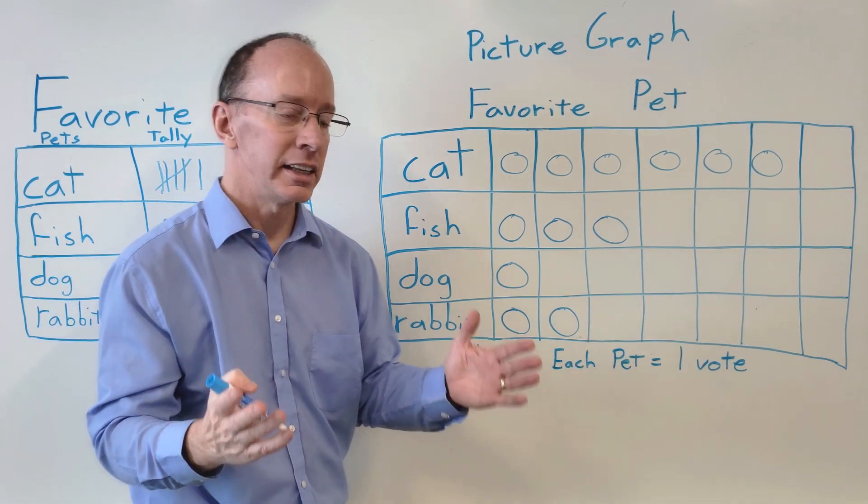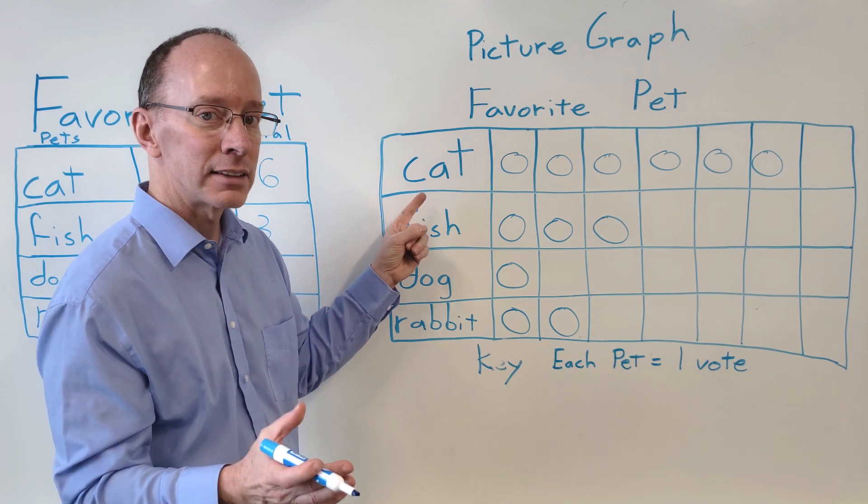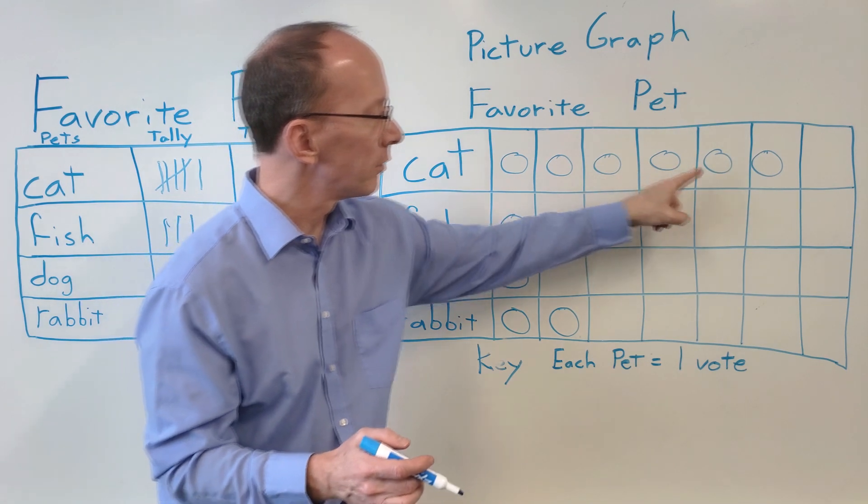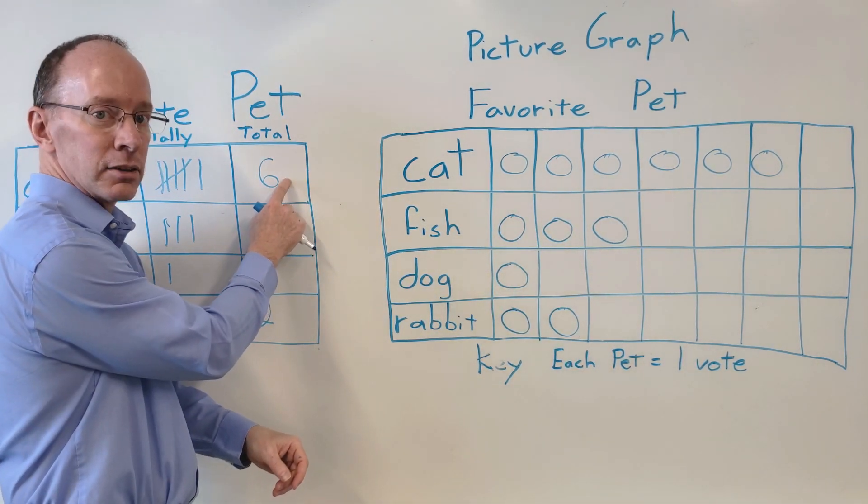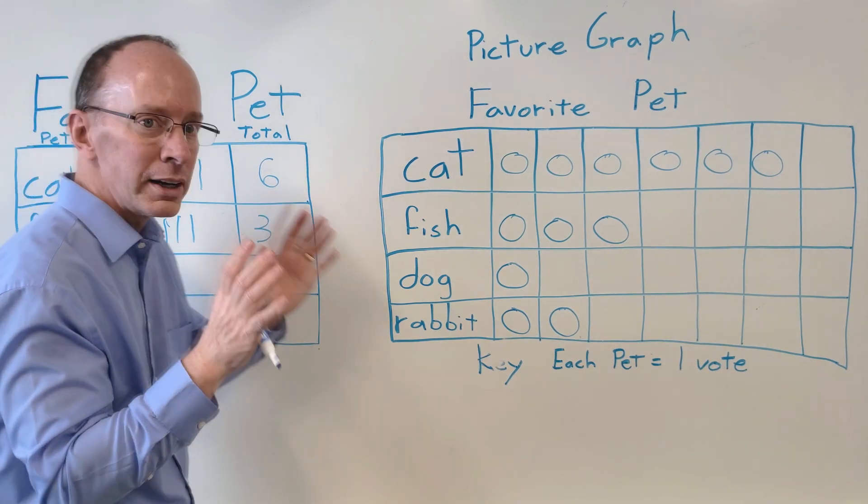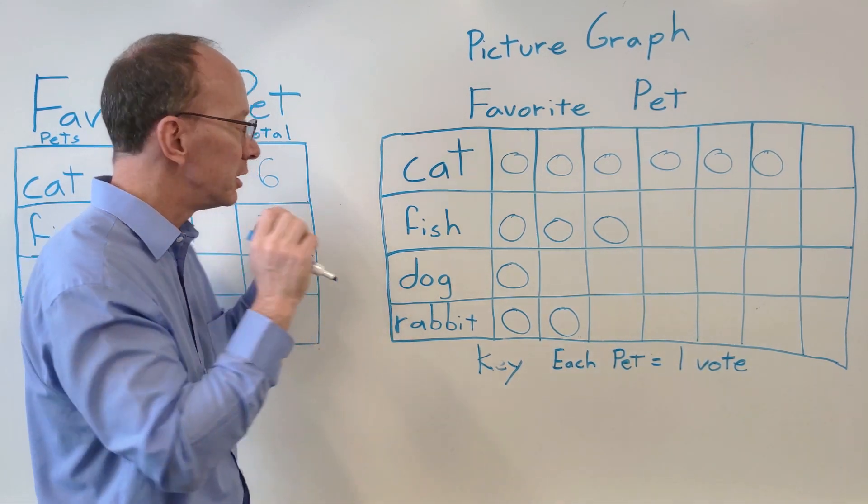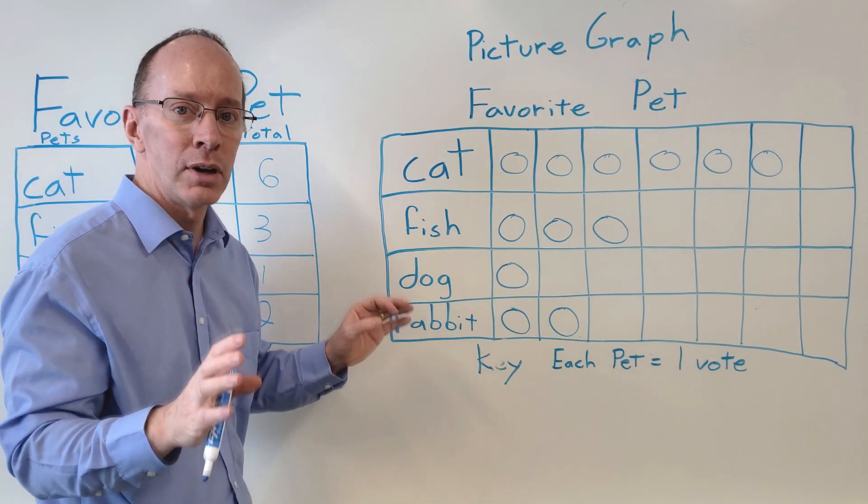So let's take a look at the information we have here. How many people liked cats? We have one, two, three, four, five, six. Now we had that information here from our survey. But what a picture graph does, it shows you visually. Instead of seeing the numbers, now you can see it visually. And that's what a graph shows.